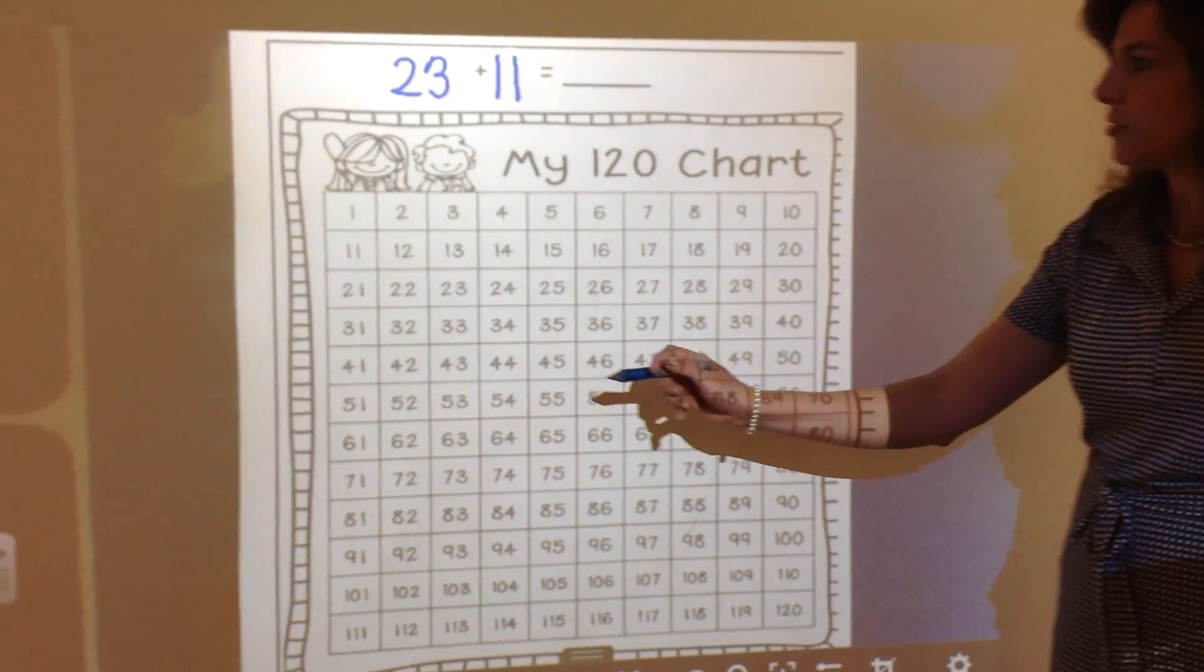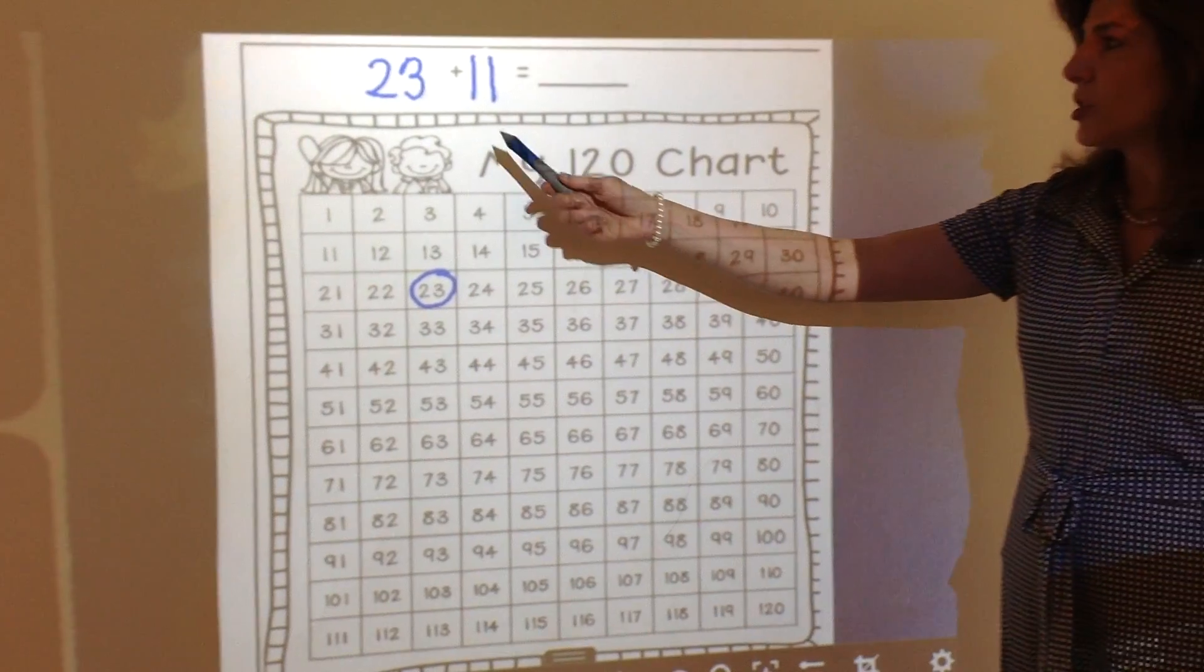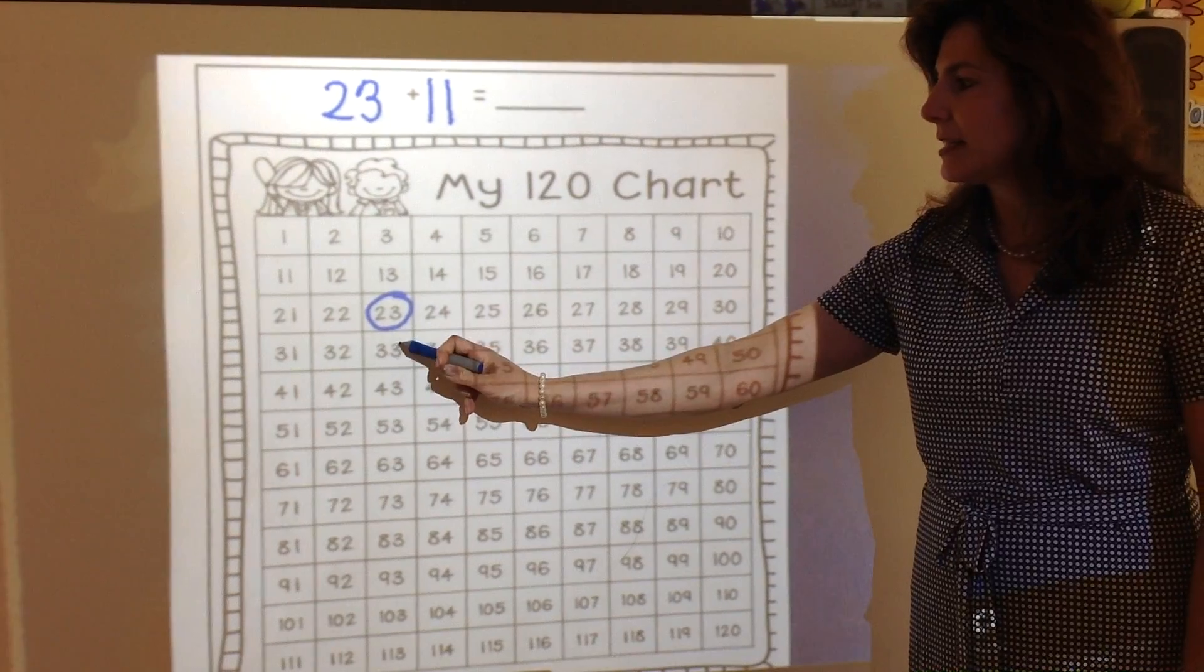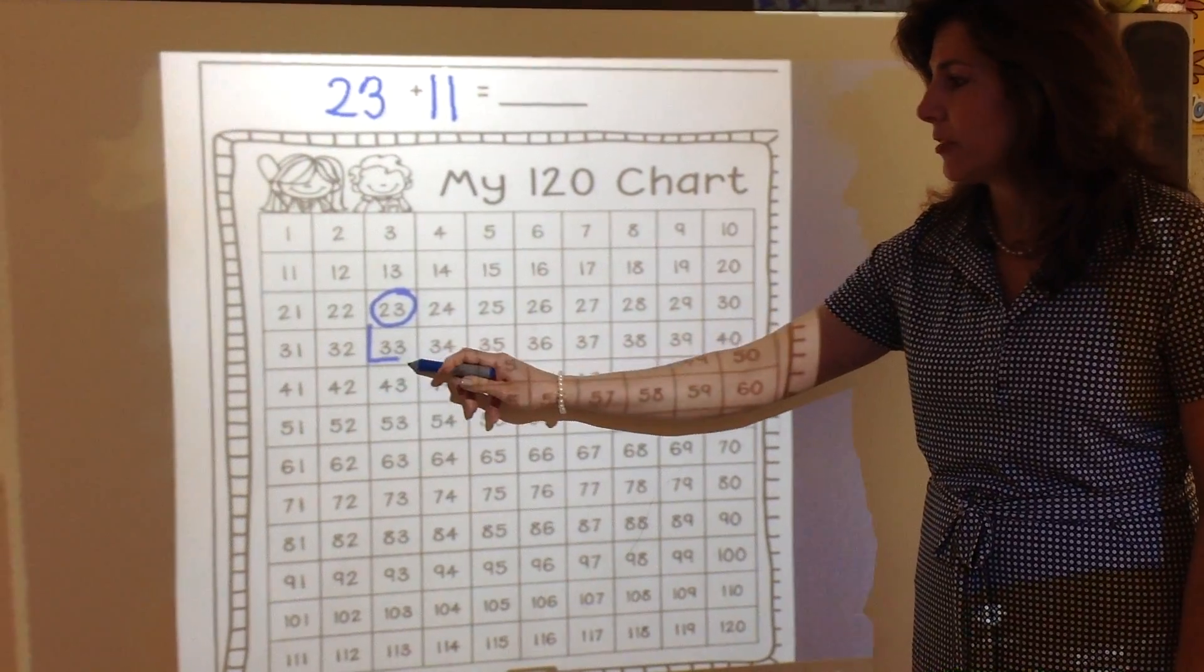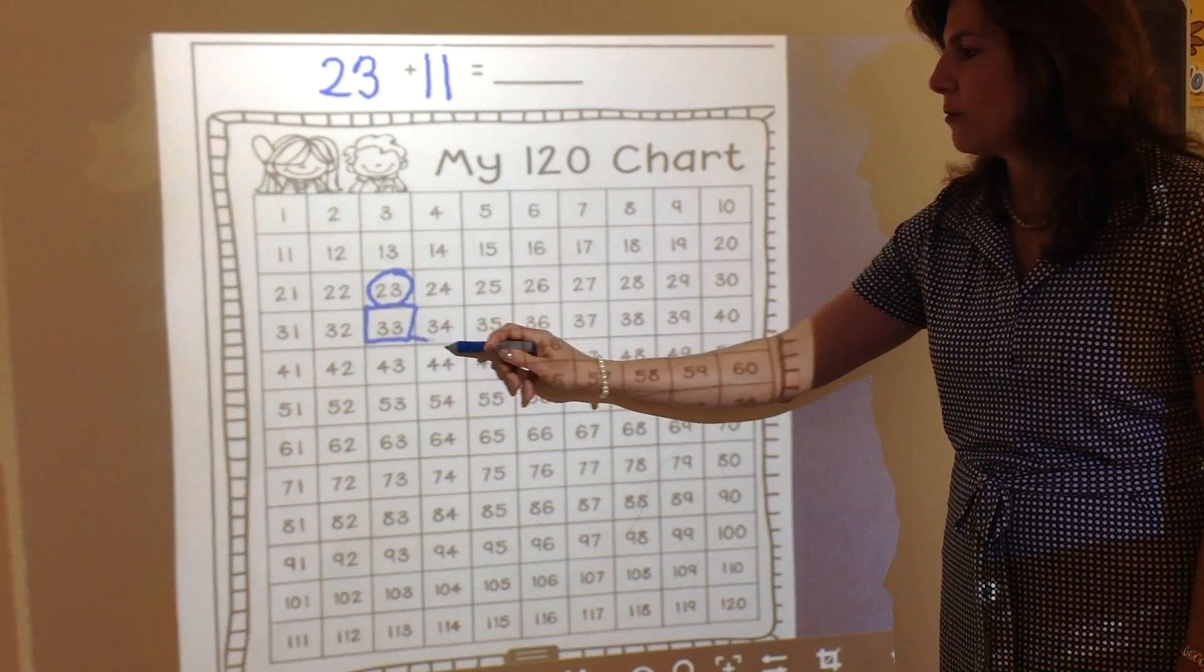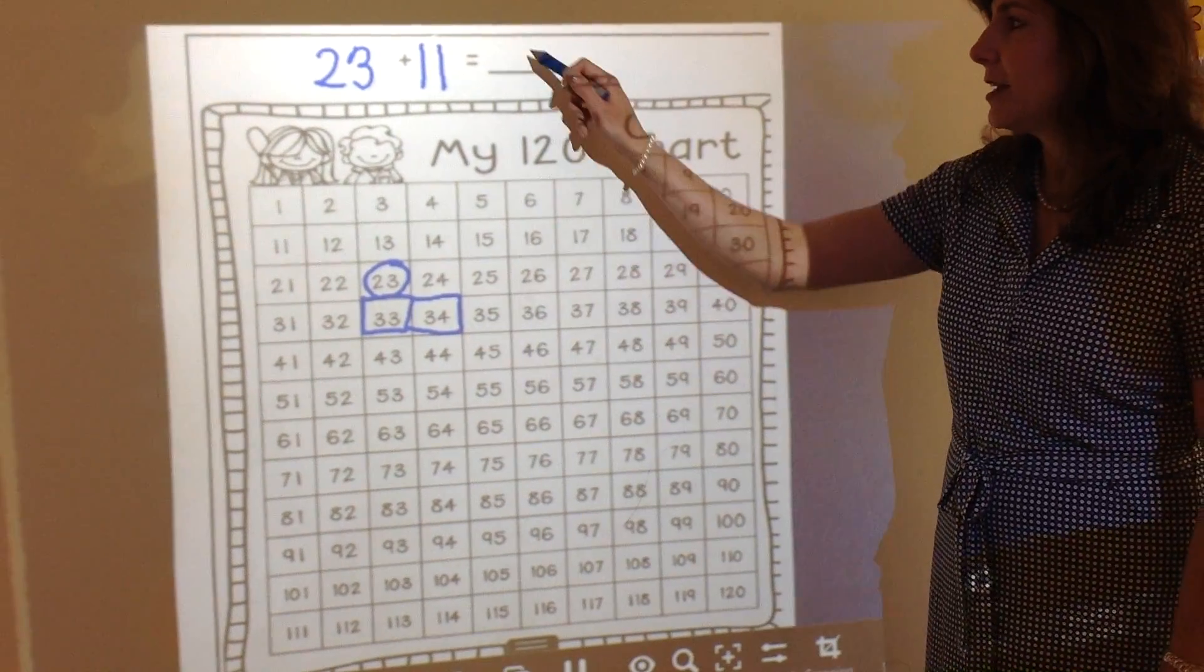We begin on the first addend, 23, and we're adding 11, which is 1 ten and 1 one. As we learned, 23 and 10 more is 33, and now we add one more by moving across. So 23 plus 11 is 34.